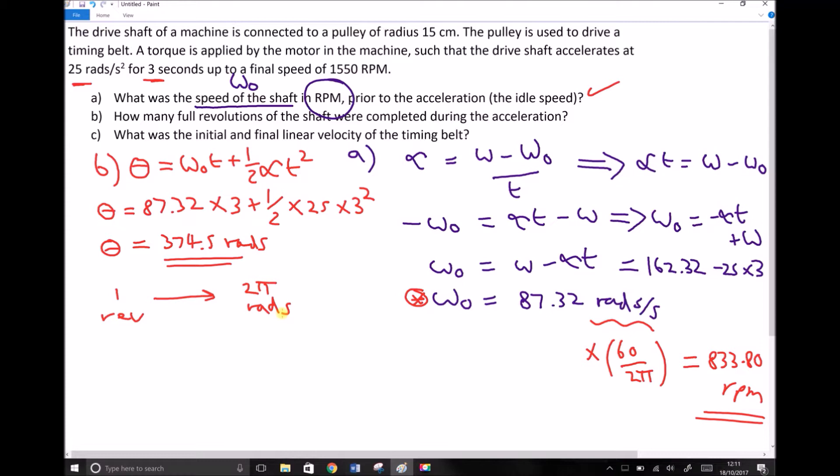So to get from radians to revolutions, so going the opposite way, this way here, we need to divide by two pi. Well 374.5 divided by two pi gives us 59 revs or revolutions.